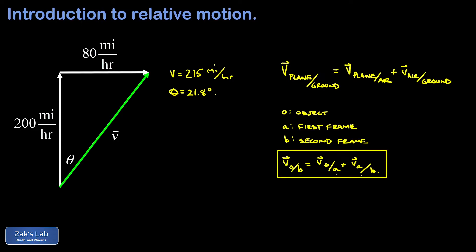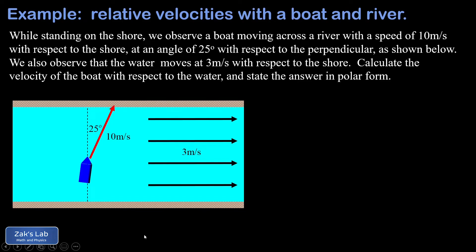It's really important to have a general formula like this because the problems can quickly become very confusing. Here's a boat example with a boat crossing a river — the water is a moving reference frame with respect to the shore. We're told we're standing on the shore and observe a boat moving across a river at 10 meters per second with respect to the shore at an angle of 25 degrees with respect to the perpendicular.